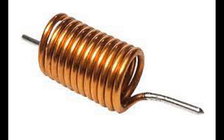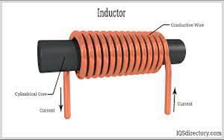The principle of operation of a coil, also known as an inductor, is based on Faraday's law of electromagnetic induction. This fundamental law, formulated by Michael Faraday in the early 19th century, describes the relationship between a changing magnetic field and the induction of an EMF or voltage in a nearby conductor. When an electric current flows through a coil, it generates a magnetic field around it, with the strength of the field directly proportional to the amount of current passing through the coil.